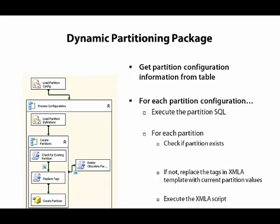When we process all the partitions, we then have another script task that runs only if we set the obsolete partitions flag in the configuration table. This script task checks to see if there are any partitions in the cube that don't match the partitions that the fact table requires. In other words, if we have archive data removed from the fact table but there is still a partition in the cube, we need to delete that partition so that the cube matches the source fact table. As we'll see in the demonstration, the package to process partitions works similarly, except that we don't have the step to delete obsolete partitions.